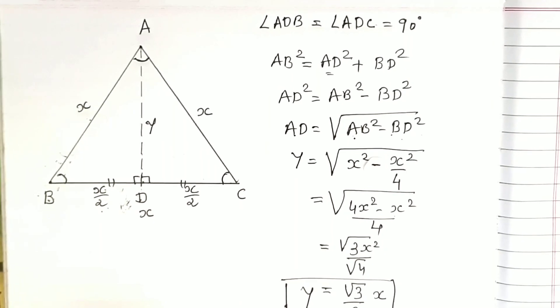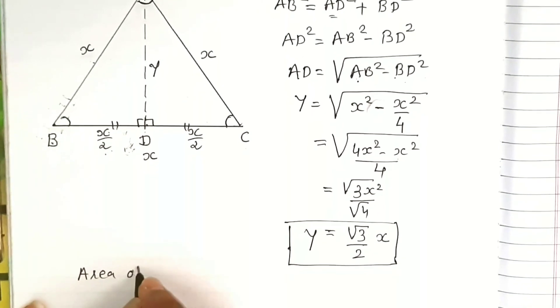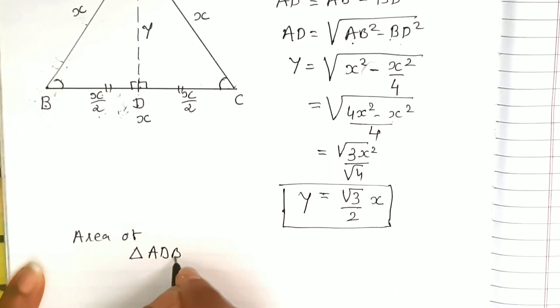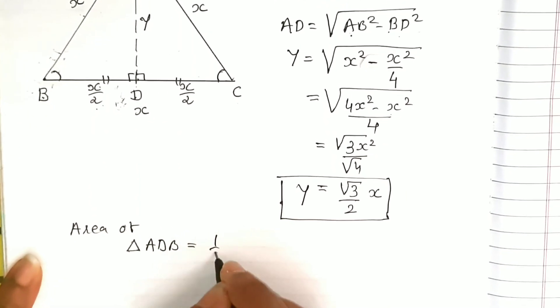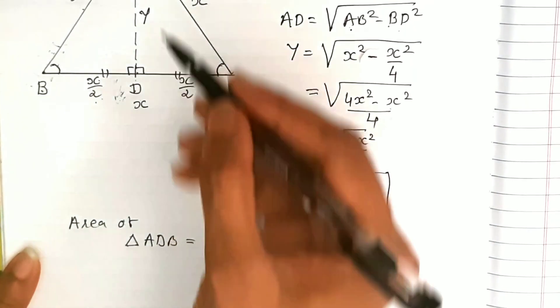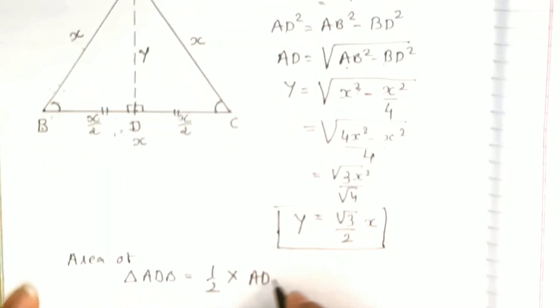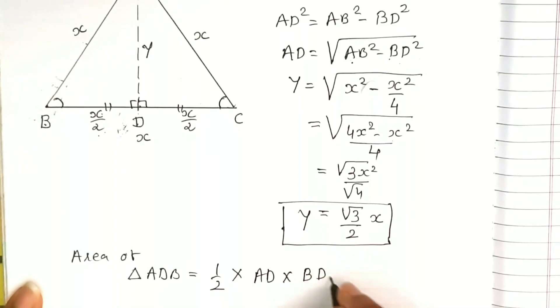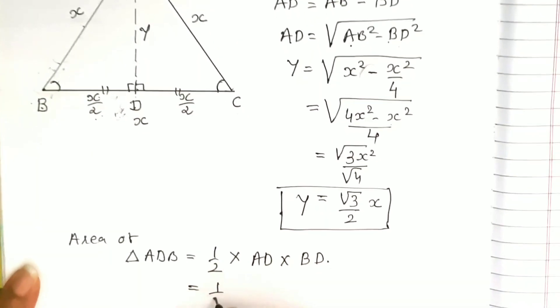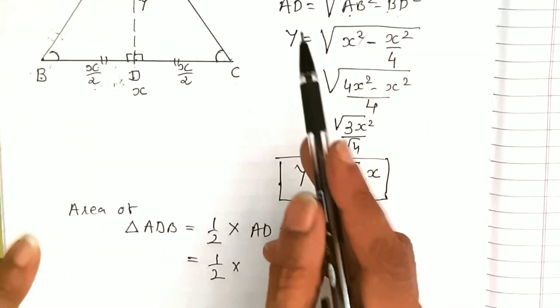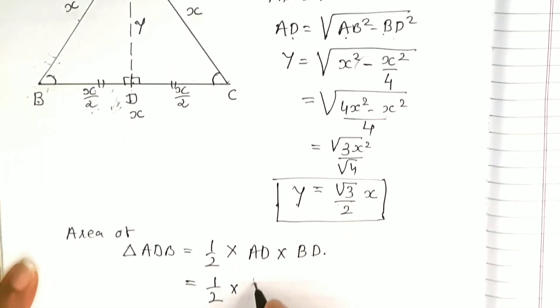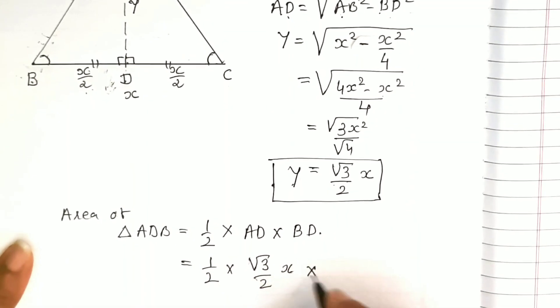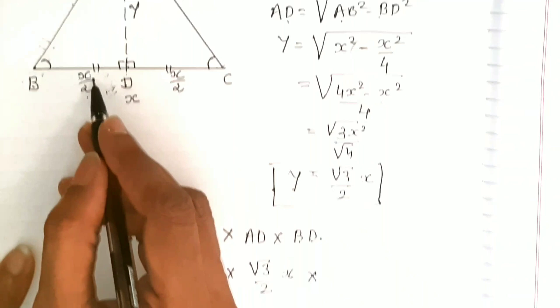For here we have area of triangle ADB equals one half into altitude, that is AD, into BD, that is our base, which is one half into AD equals the square root of 3 upon 2x into BD, that is x by 2.